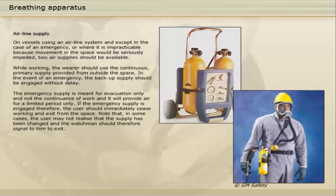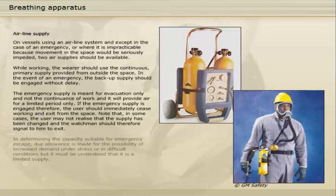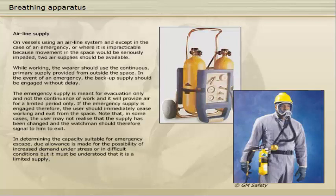If the emergency supply is engaged, the user should immediately cease working and exit from the space. Note that in some cases the user may not realise that the supply has been changed, and the watchman should therefore signal to him to exit. In determining the capacity suitable for emergency escape, due allowance is made for the possibility of increased demand under stress or in difficult conditions. But it must be understood that it is a limited supply.